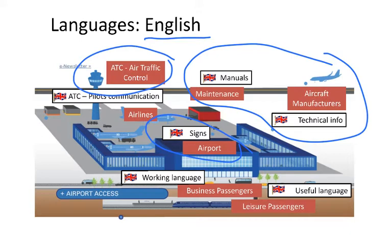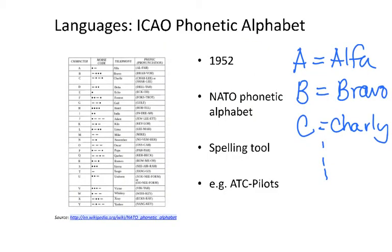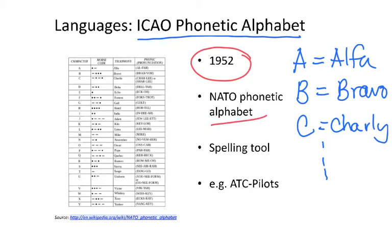English is a very useful language when traveling and has become the main working language for business. Alpha, Bravo, Charlie belong to the ICAO phonetic alphabet. It was born in 1952 and is also called the NATO phonetic alphabet, mainly used as a spelling tool in communications between pilots and ATC.